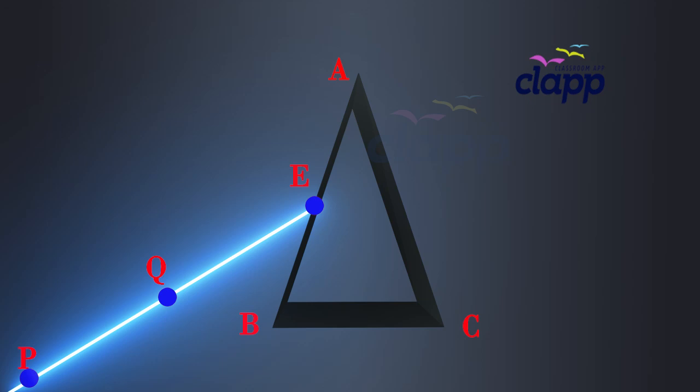Look for the images of the pins fixed at P and Q through the other face AC. Fix two more pins at points R and S, such that the pins at R and S and the images of the pins at P and Q lie on the same straight line.